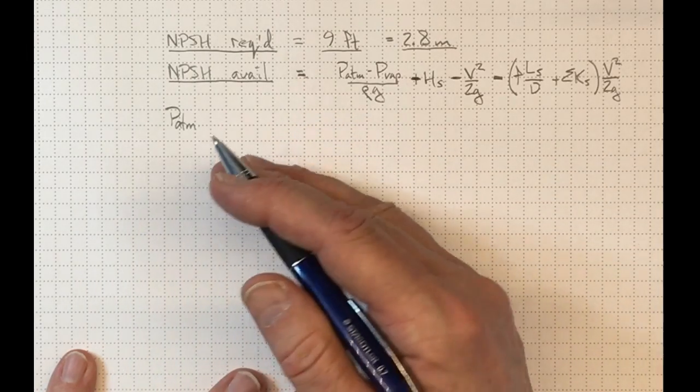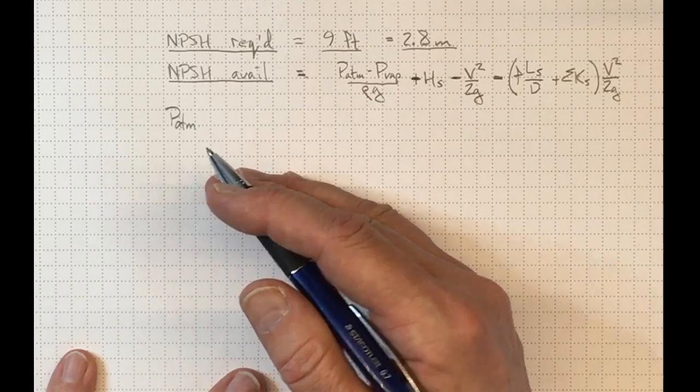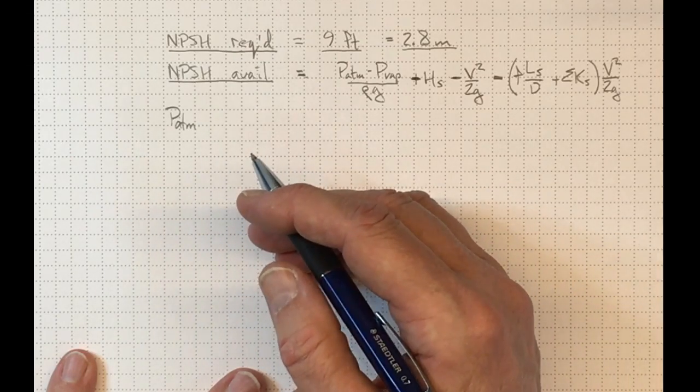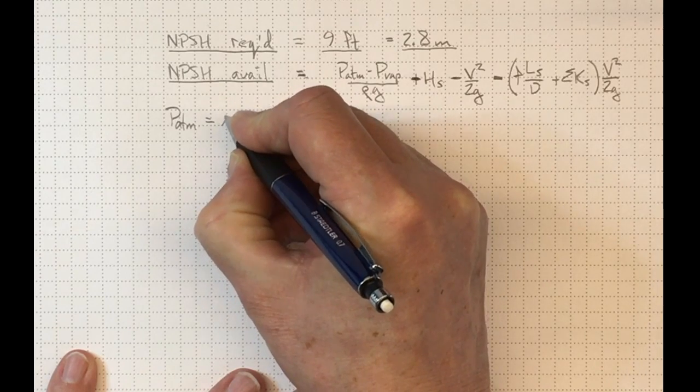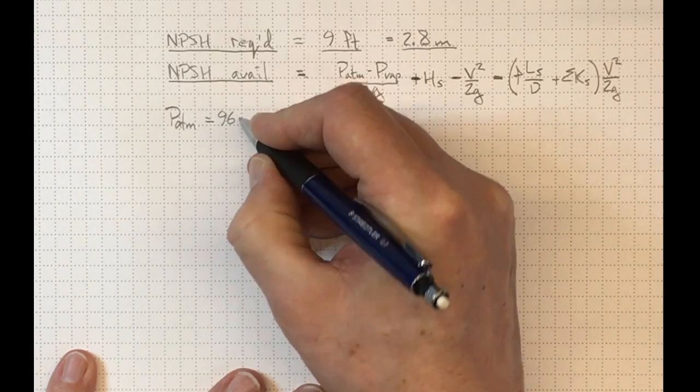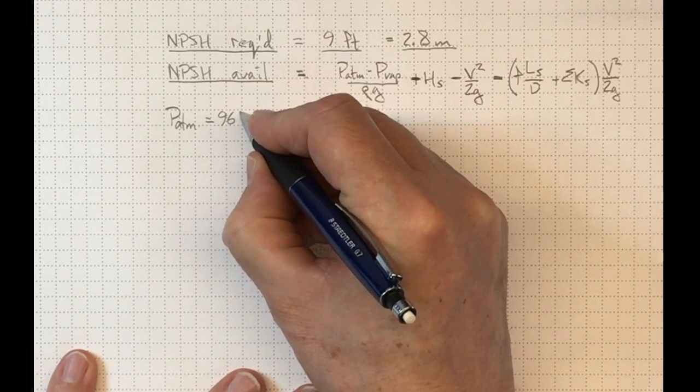And sometimes the pressure drops below standard atmospheric pressure. So our atmospheric pressure that we will design for will be, say, 96 kilopascals, or 96,000 pascals.